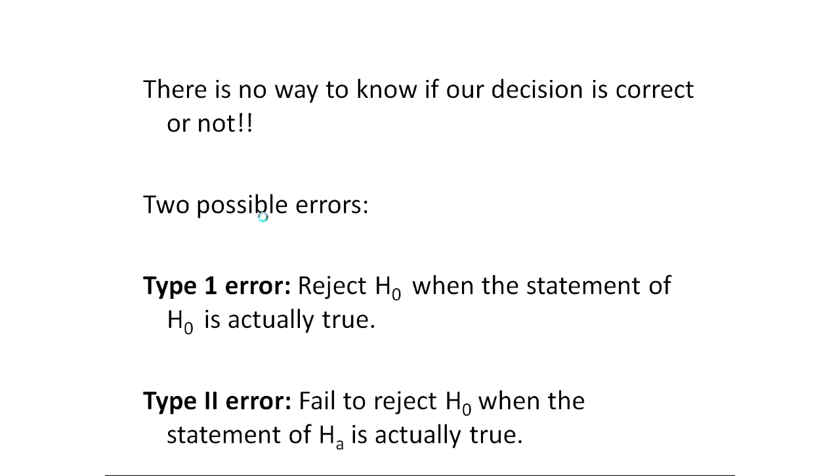A type 2 error would be when I fail to reject H naught, that means I say I don't see anything interesting in the sample, you can't prove to me that something different is true, but actually something different was true. Another way to think about both of these is a lot of time, HA is an interesting thing, the drug has an effect that brings down cholesterol or something like that.